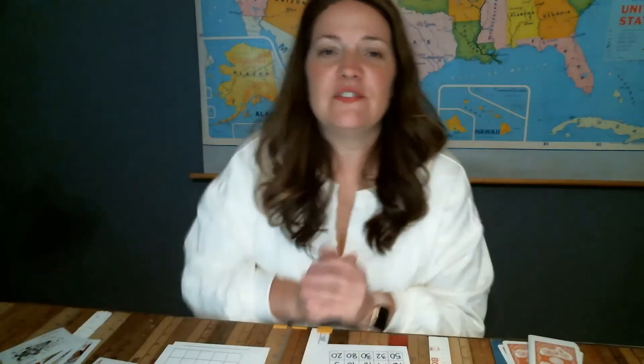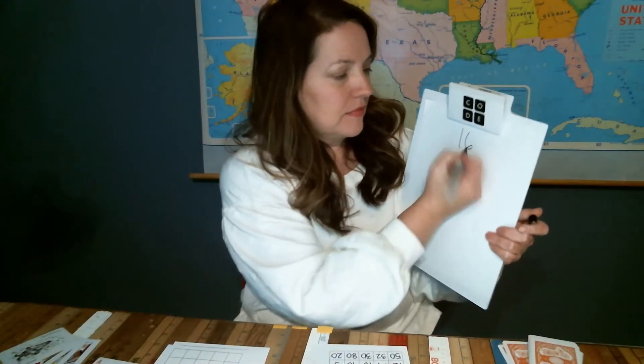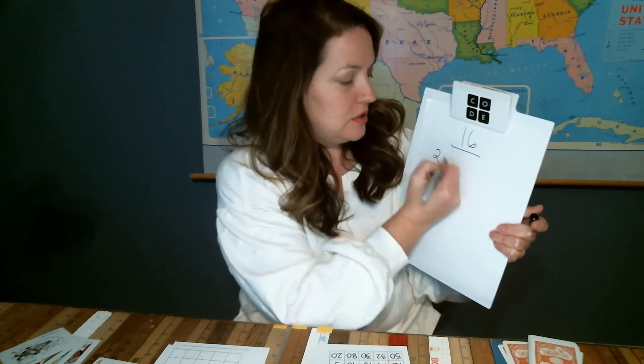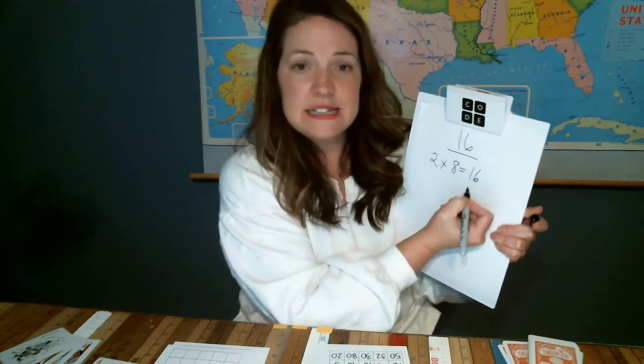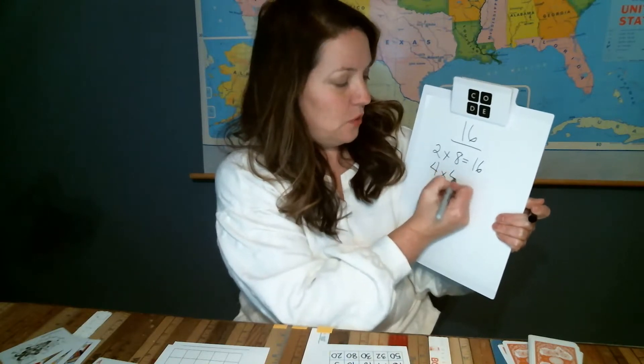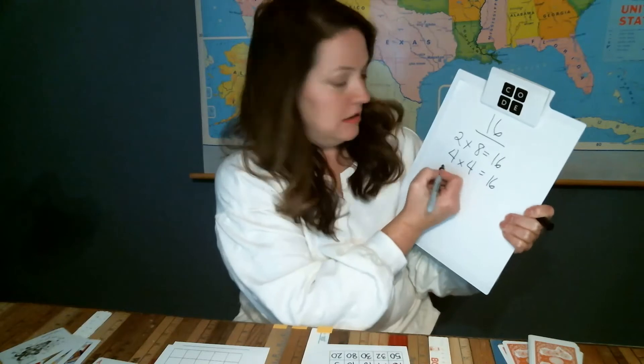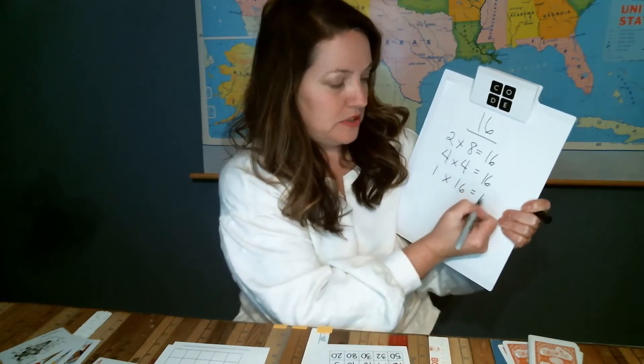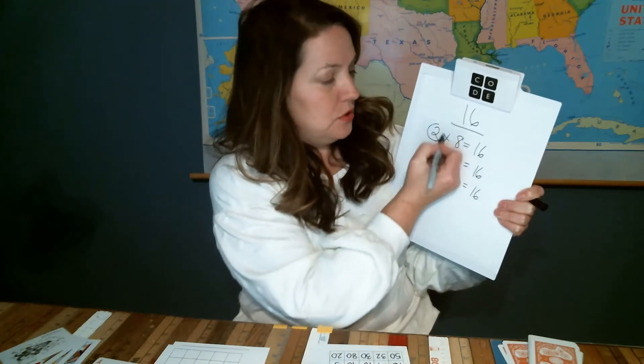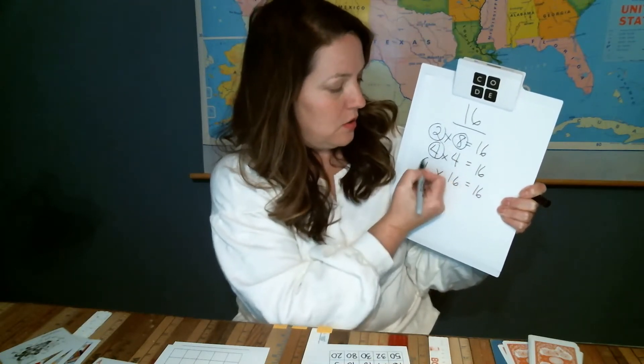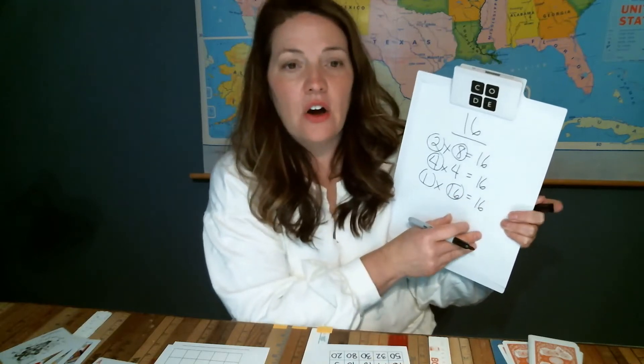A number can have many factors. Let's think about numbers we can multiply together to get 16. I know that 2 times 8 equals 16, 4 times 4 also equals 16, and 1 times 16 equals 16. So the numbers 2, 8, 4, 1, and 16 are all factors of 16. Understanding factors makes it easier to work with fractions and to find patterns in numbers. And finding patterns is very helpful in solving all types of problems, not just math problems.